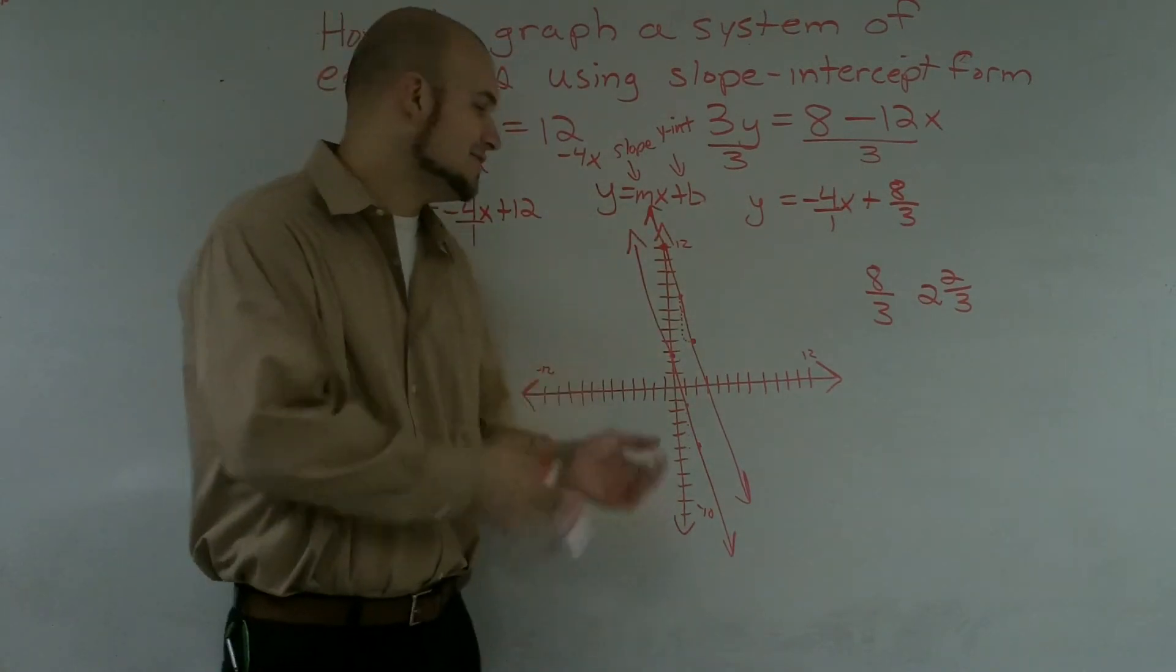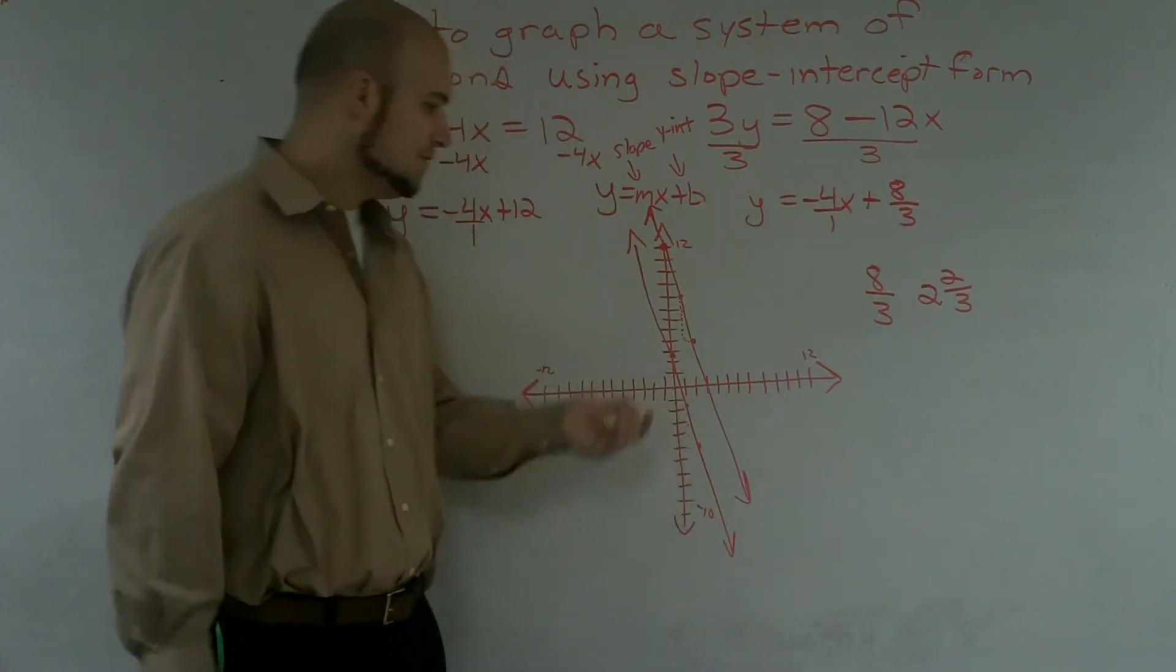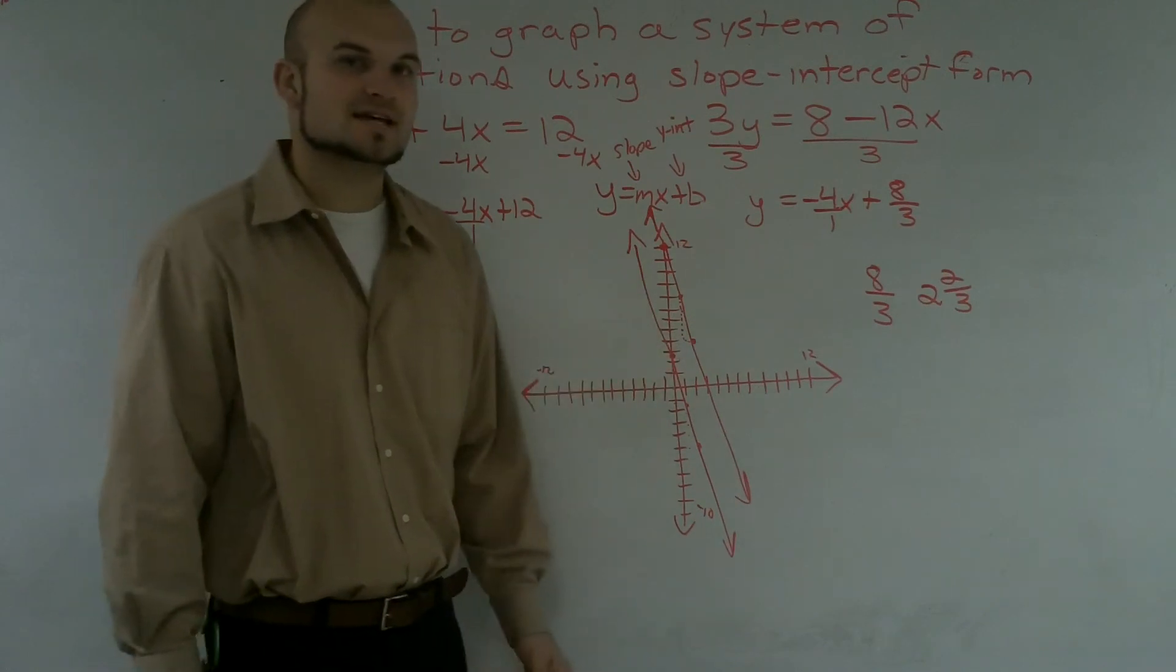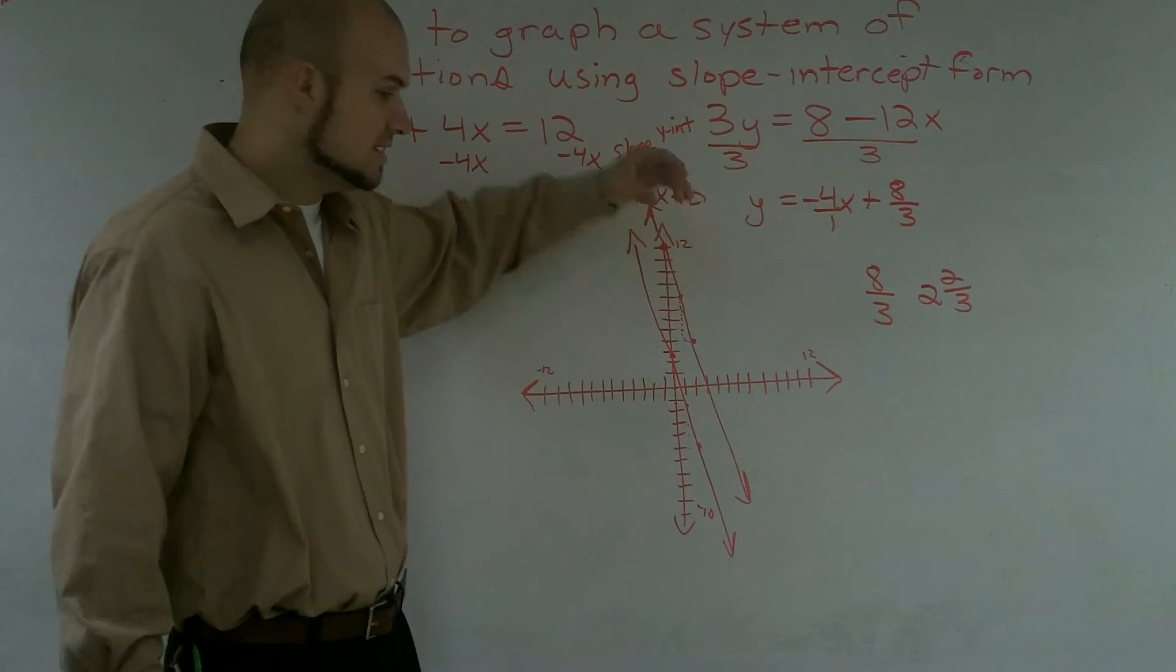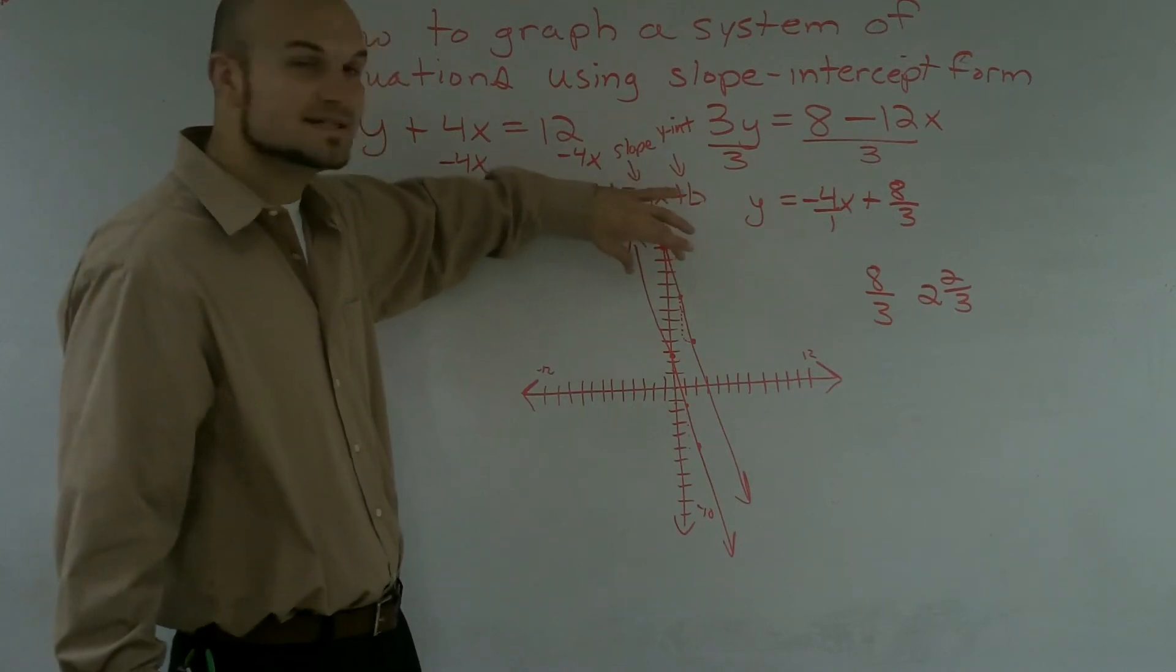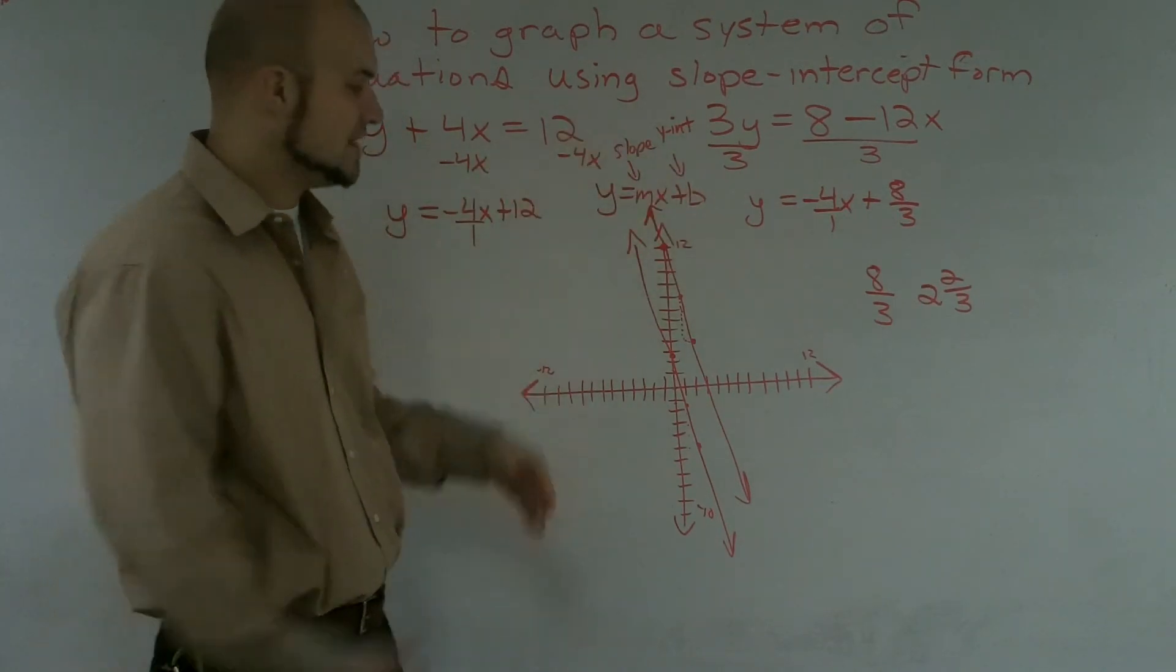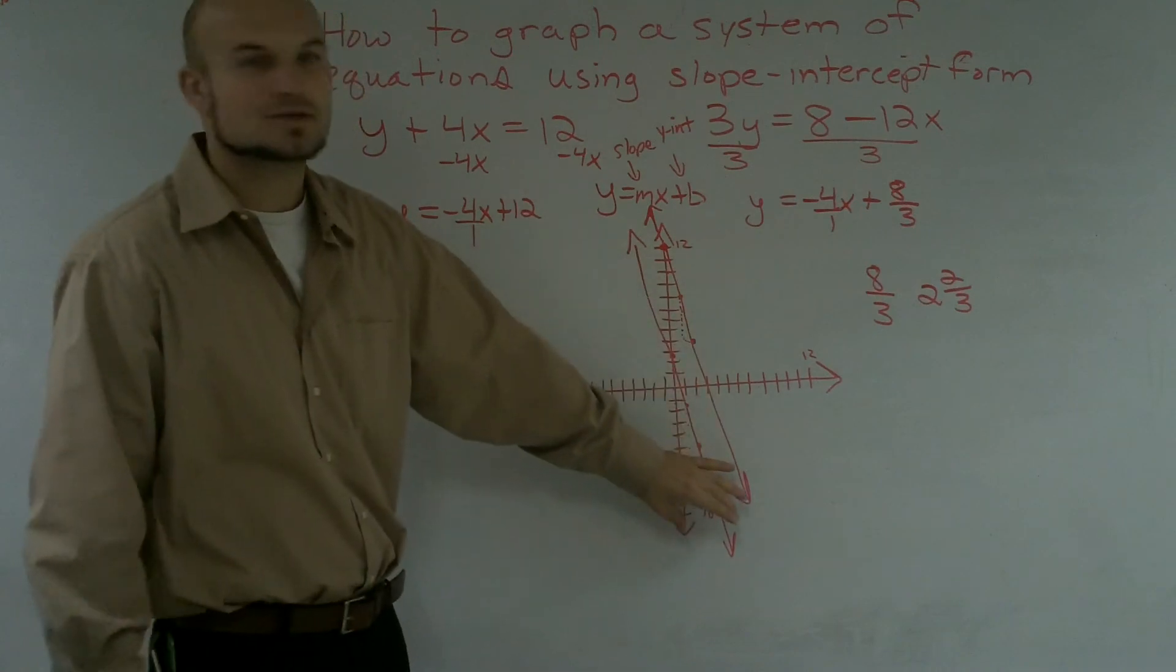And by following my rough sketch of my graph, what I notice is these lines are never going to intersect. So therefore, this is an inconsistent graph, and there is no solution to the graph. There's no place where the two equations graph.